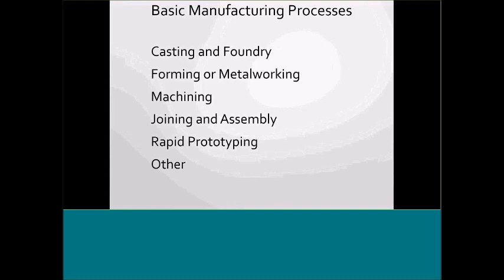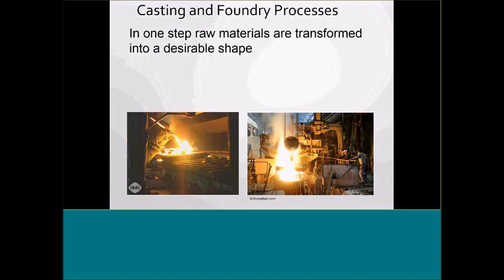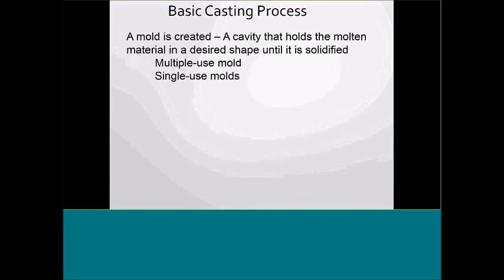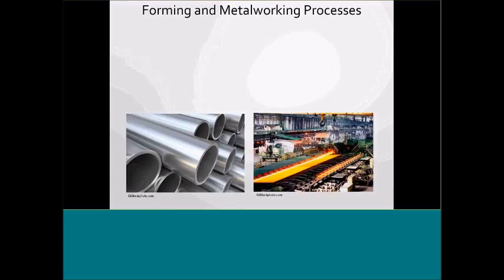As far as the basic manufacturing processes we'll be covering: casting and foundries, forming and metalworking, machining, joining and assembly, and rapid prototyping. In casting and foundry processes, the steps involve picking the materials and transforming them into a desirable shape. Sometimes parts require finishing processes, machining, or even heat treating and stress relieving. Excess material is recyclable. The basic casting process involves creating the mold, heating the material, pouring molten metal into the mold cavity, and as the metal solidifies we remove, clean, finish, and inspect it.